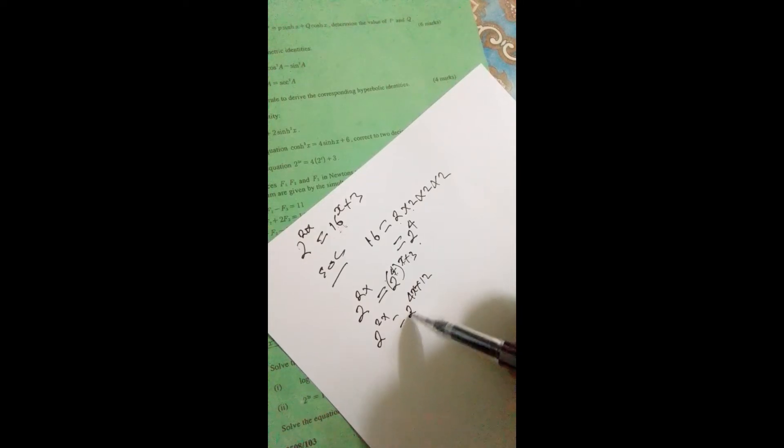Now because the bases are the same, we shall drop them and write the powers: 2x equals 4x plus 12.